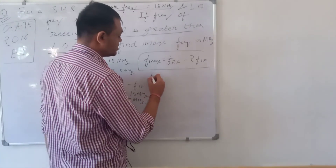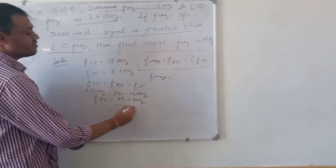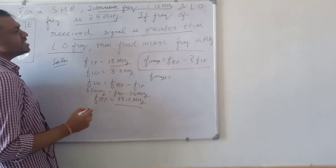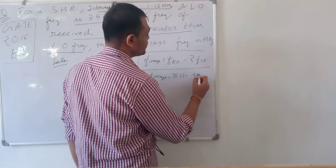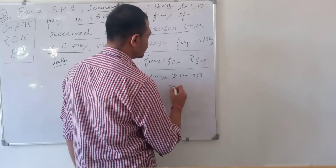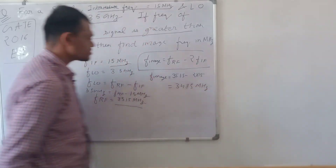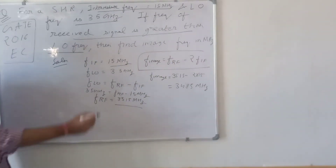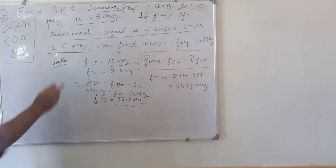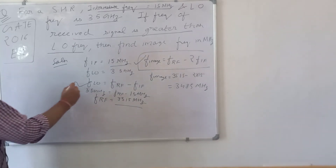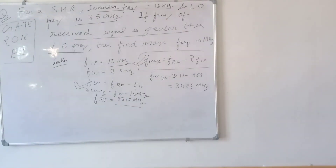Substituting values: FRF is 3.515 gigahertz and FIF is 15 megahertz, so image frequency equals 3.515 gigahertz minus 2 times 15 megahertz, giving 3.485 gigahertz. These are the two formulas to use when the received signal frequency is greater than the local oscillator frequency. Thank you — please like, share, and subscribe.